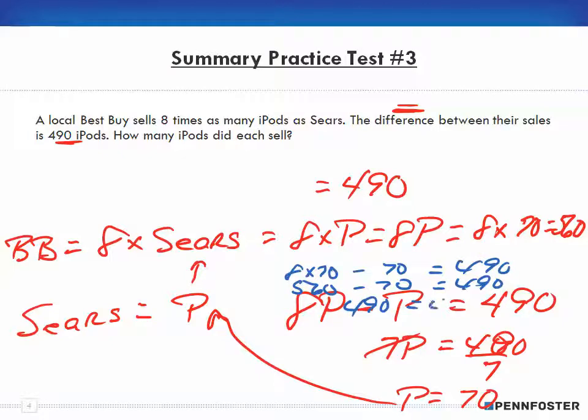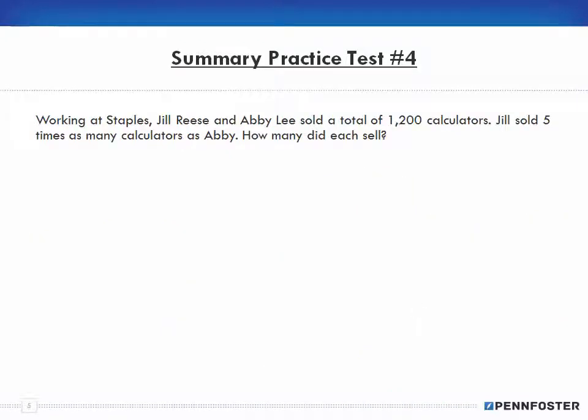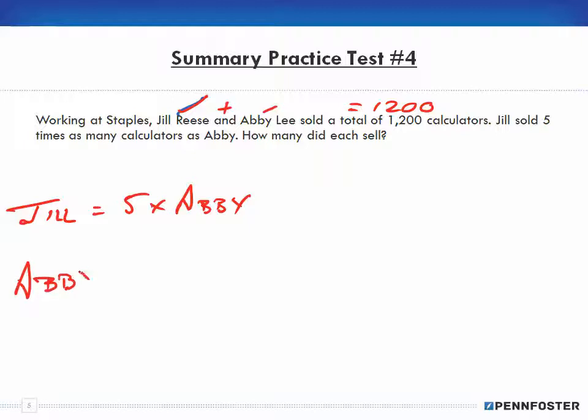All right, let's do one more here. Working at Staples, Jill Reese and Abby Lee sold a total of 1,200 calculators. Jill sold five times as many calculators as Abby, so that's the relationship: Jill sells five times Abby. Since Jill is based upon Abby, we set Abby as the variable, I don't know, C for calculators. And then that means Jill would be five times - since we're placing the C for Abby - would be five times C or 5C.